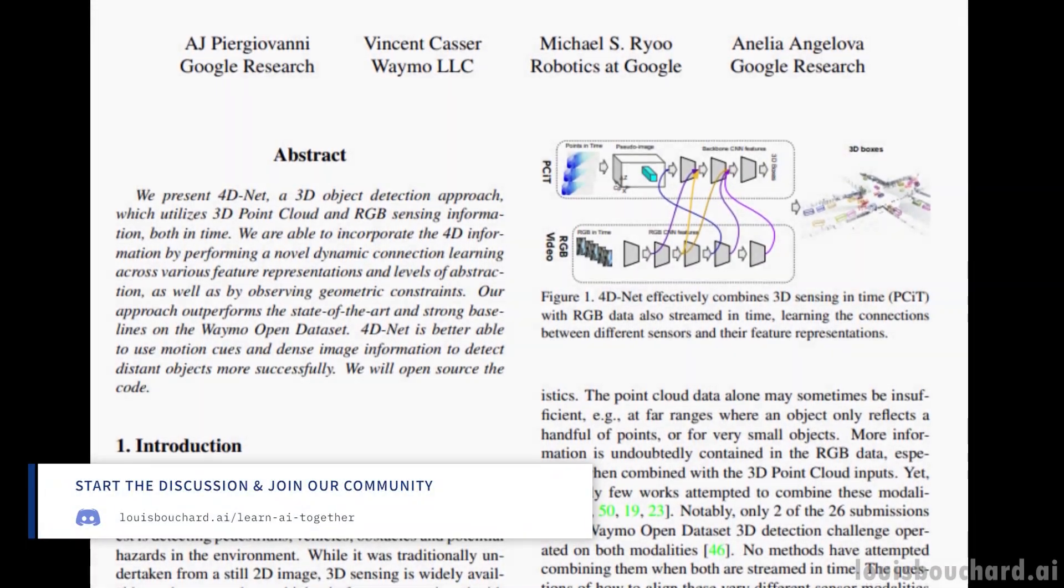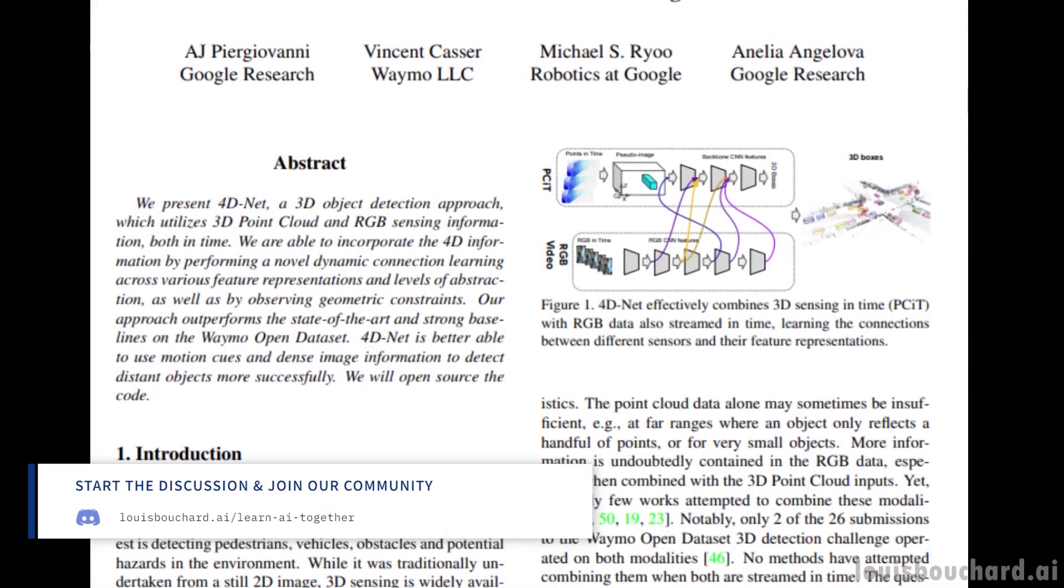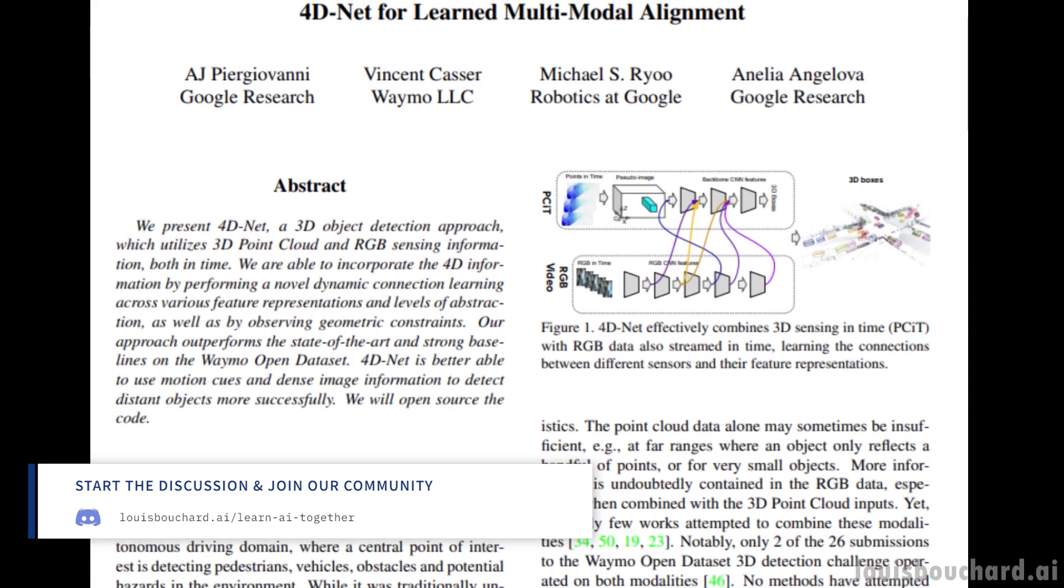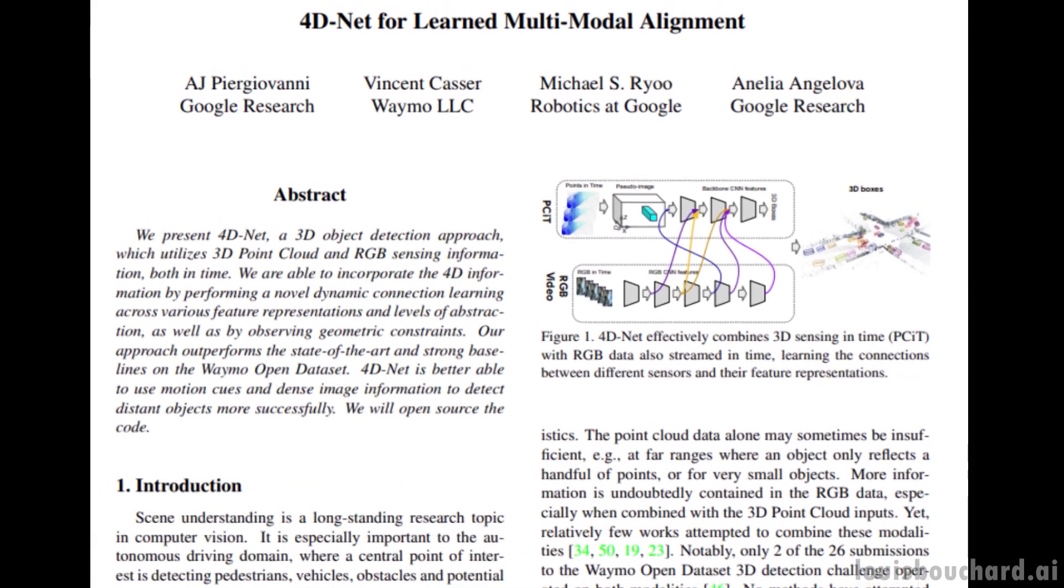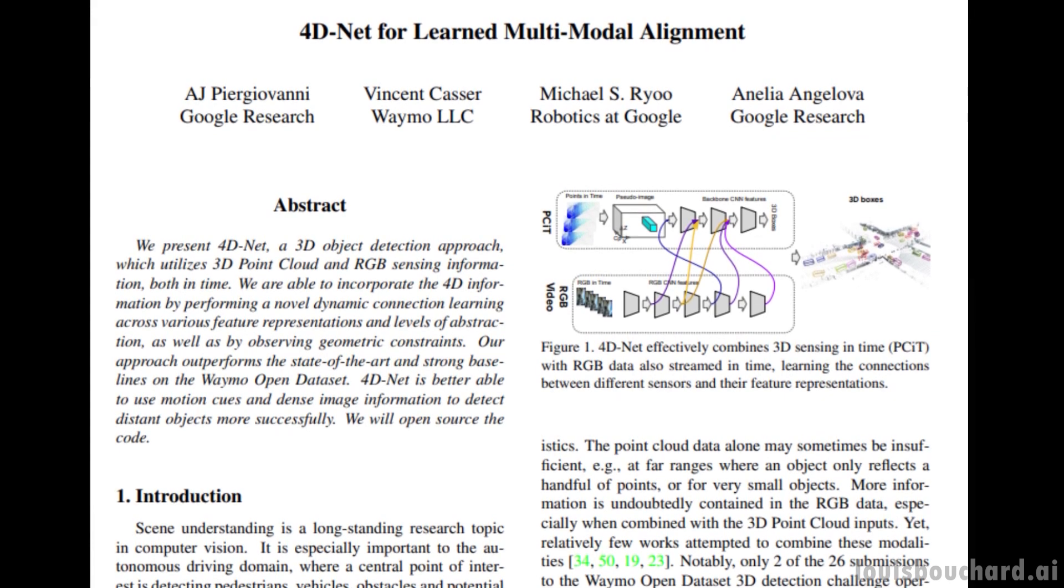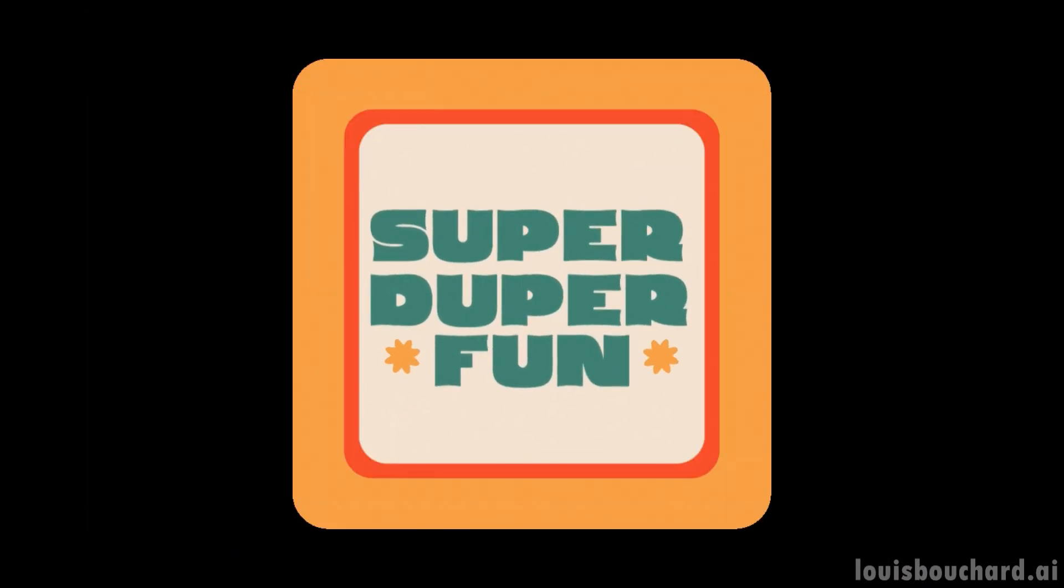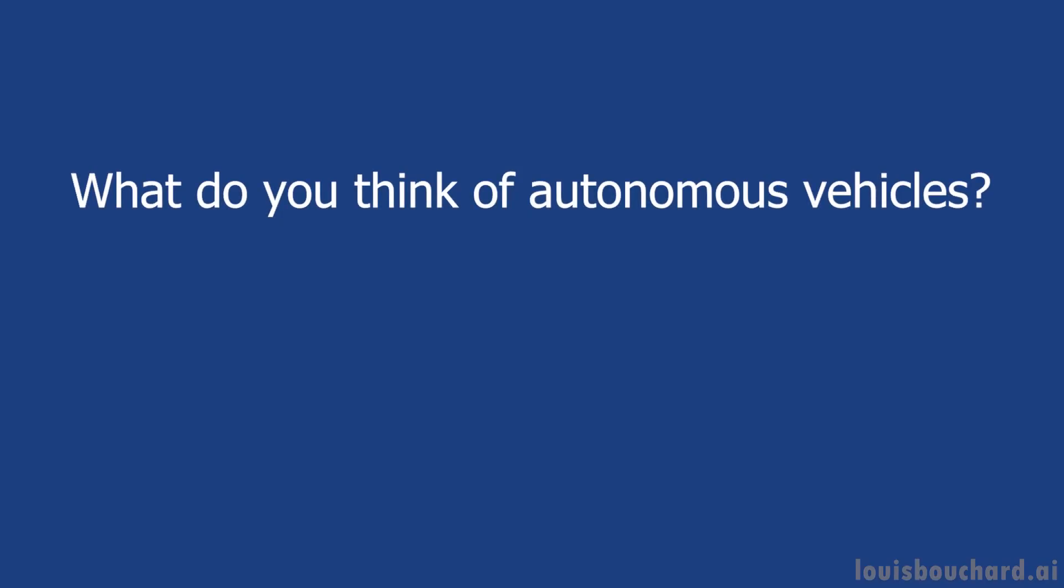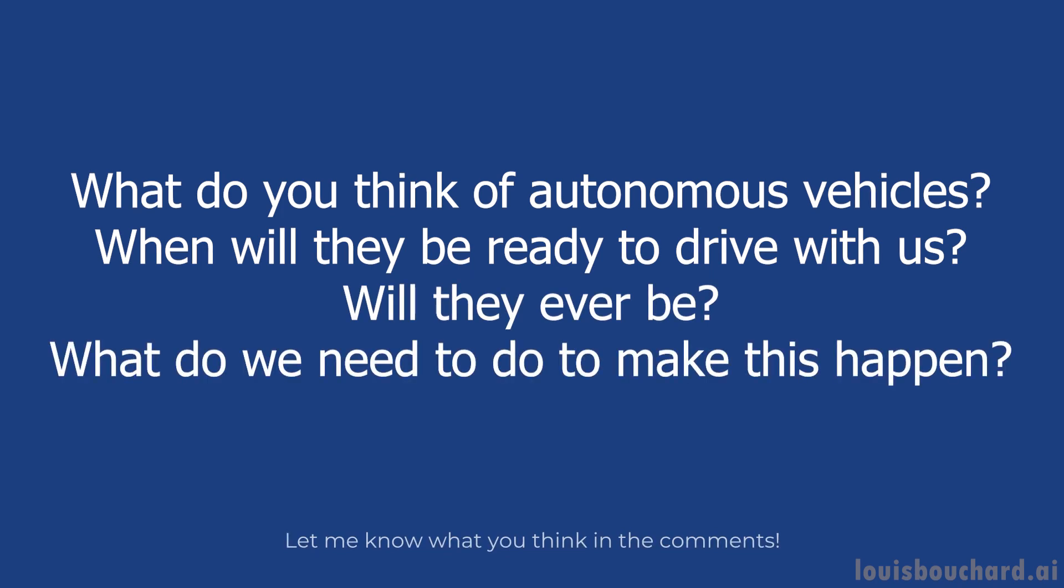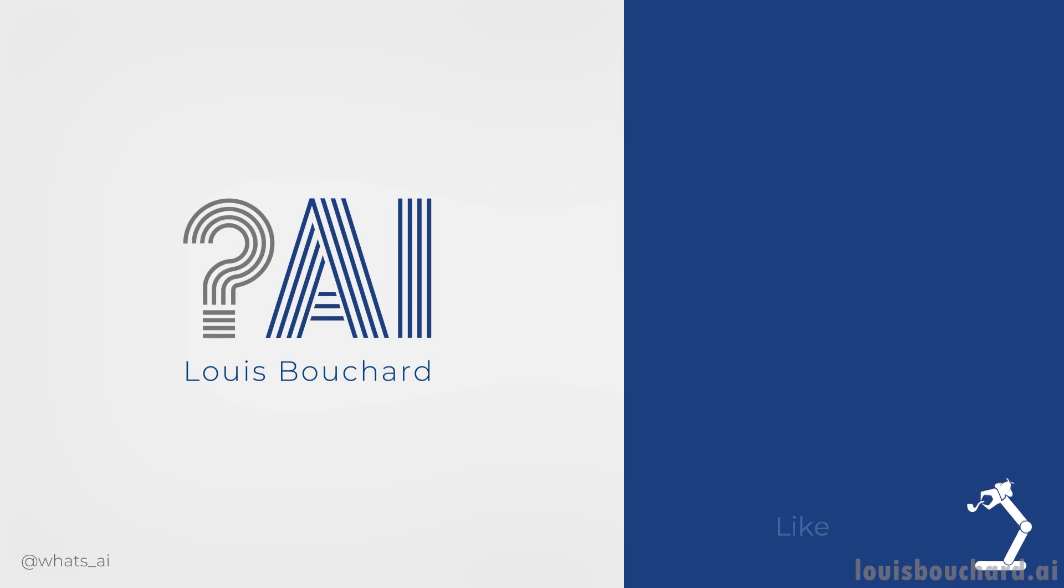Of course, this was just an overview of this new paper by Google Research and Waymo. I'd recommend reading the paper to learn more about their model's architecture and other features I didn't dive into, like time information's efficiency problem. It's linked in the description below. I hope you enjoyed the video and if you did, please consider subscribing to the channel and commenting what you think of this summary. I'd love to read what you think. Thank you for watching, and I will see you next week with another amazing paper!